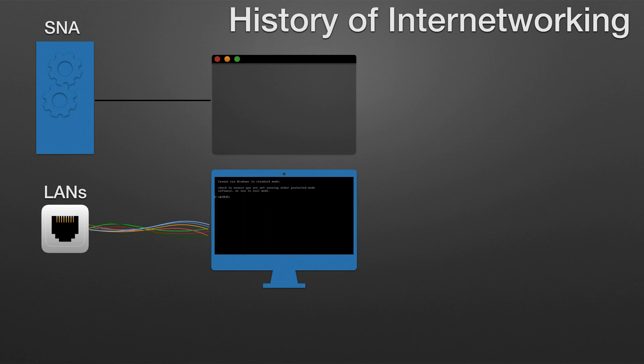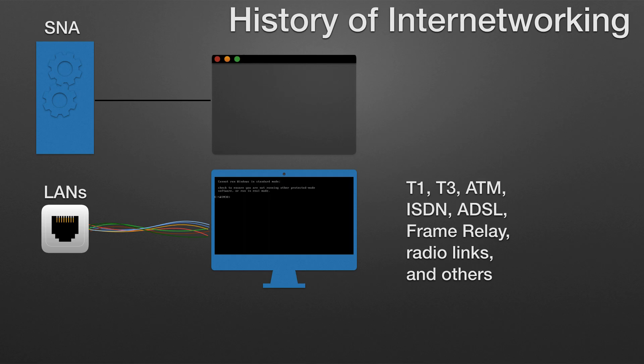Wide Area Networks interconnect LANs with geographically dispersed users to create connectivity. Some of the technologies used for connecting LANs include T1, T3, ATM, ISDN, ADSL, Frame Relay, Radio Links, and others. New methods of connecting dispersed LANs are appearing every day. Today, high-speed LANs and switched Internet Works are widely used, largely because they operate at very high speeds and support high-bandwidth applications such as multimedia and video conferencing.